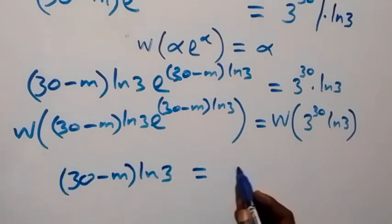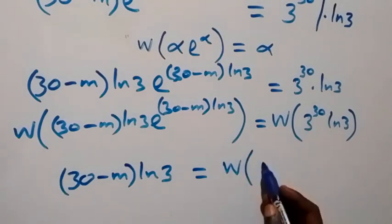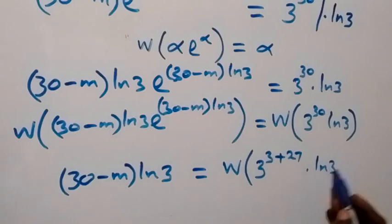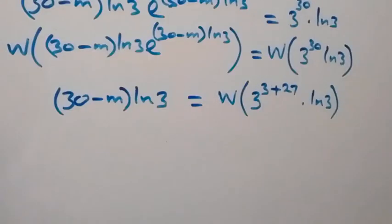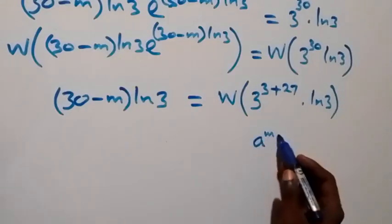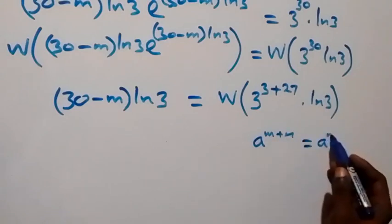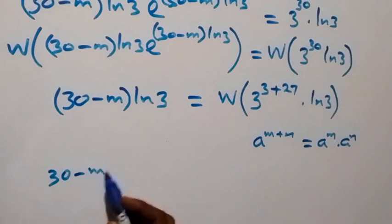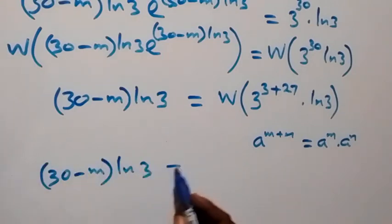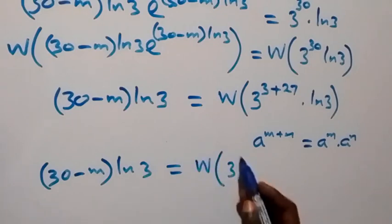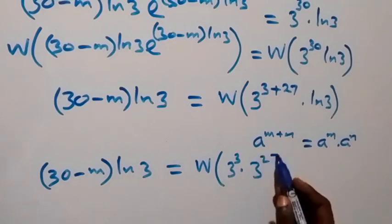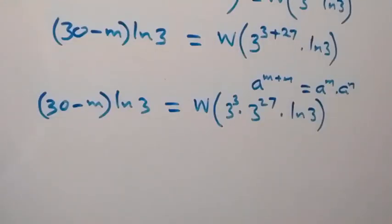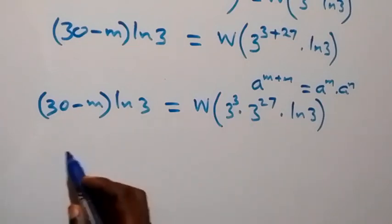Now we write 3 raised to power 30 as 3 raised to power 3 plus 27, which by the law of indices is 3 raised to power 3 times 3 raised to power 27. And 3 raised to power 3 equals 27. So 30 minus m times ln 3 equals W of 27 times 3 raised to power 27 times ln 3.